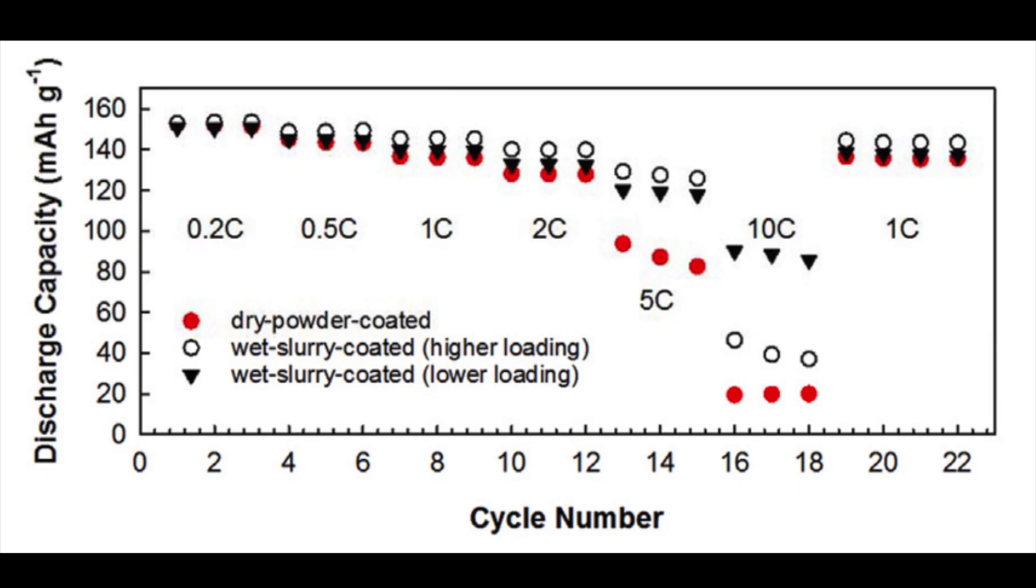One key drawback in performance for the dry electrode was that at high C-rates above 5C, a significant capacity reduction was seen compared with the wet electrode. This can be seen by the three red dots for the dry electrode at 10C having a capacity of only 20 mAh per gram.